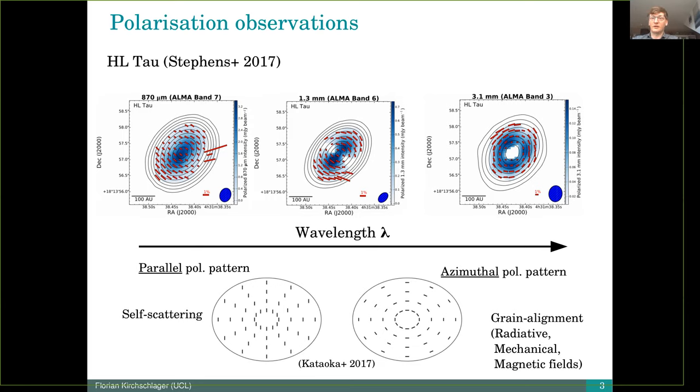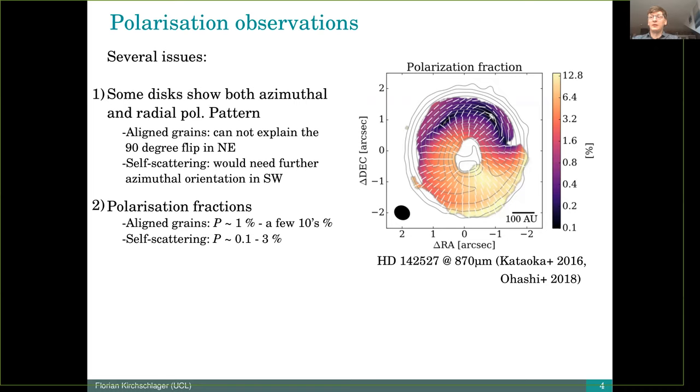In principle, these effects can explain the polarization structures, but there exist also several issues. Here you can see the disk HD 142527 at 870 micrometer, and this disk shows both effects at the same wavelength. Aligned grains alone can't explain the structure because it can't explain the 90-degree flip which you see in the northeast. And the second thing is that self-scattering alone can't explain the structure because you would need also an azimuthal orientation in the southwest of the disk.